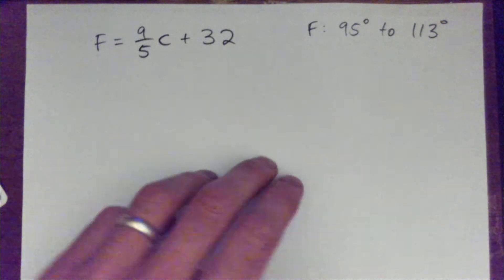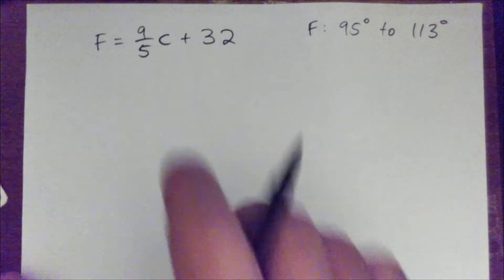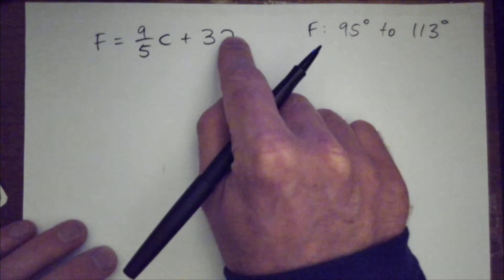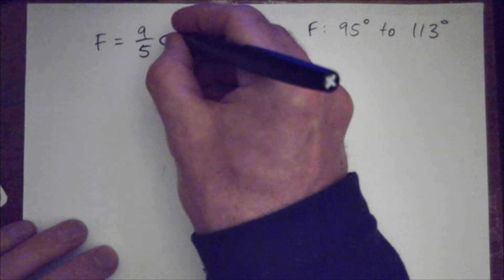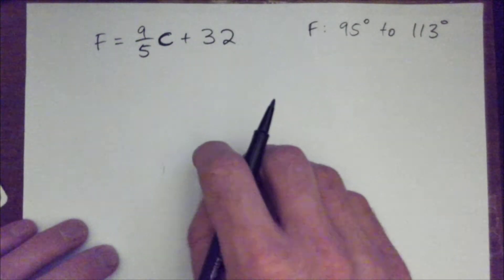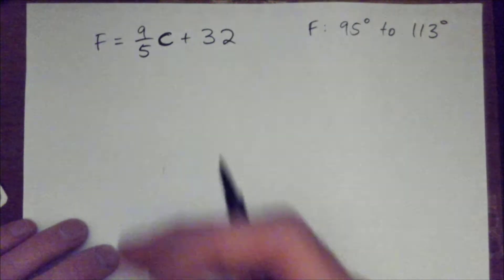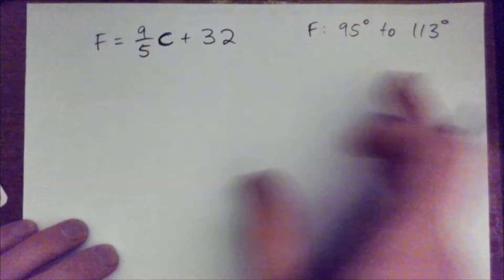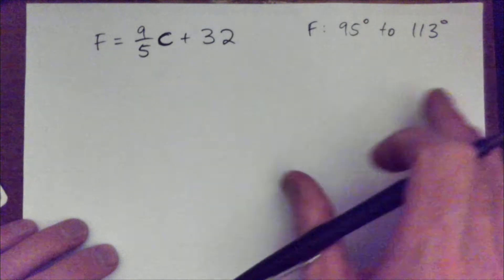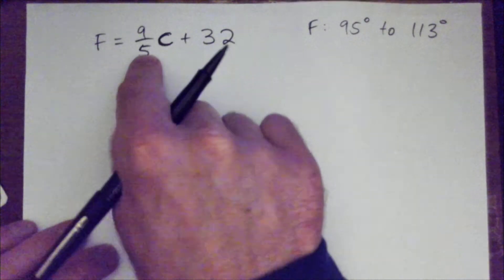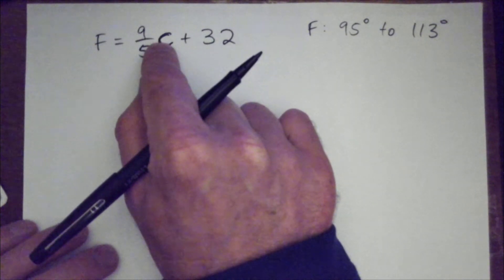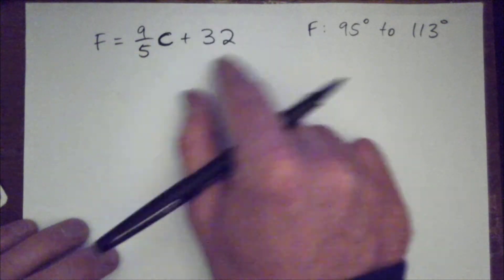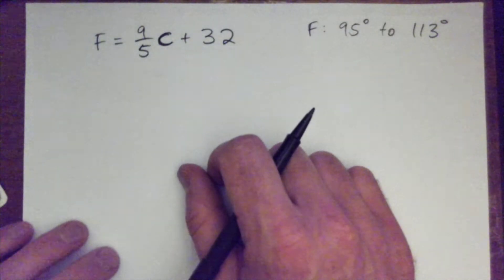Fahrenheit equals 9 over 5 times Celsius plus 32 degrees. By the way, we had this rough estimate for when you're driving down the road and you don't want to take out your paper and solve an equation — you can just round that to about twice Celsius plus 30. If you do that, it'll be roughly right.